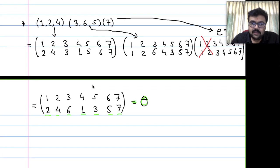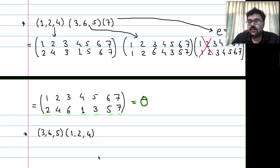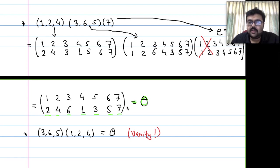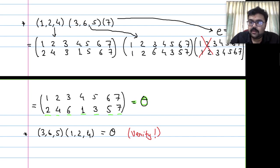What if we write the cycles in a different order, (3, 6, 5) first and then (1, 2, 4)? We should get theta again. Those seeing this for the first time should verify this. This shows that these two disjoint cycles commute — the order does not matter.